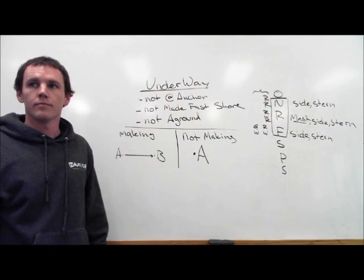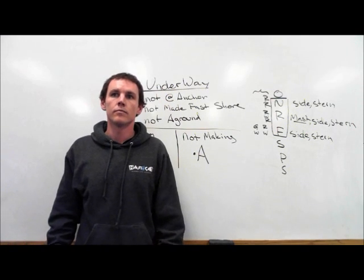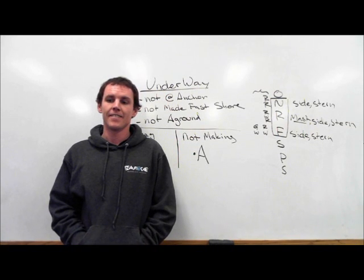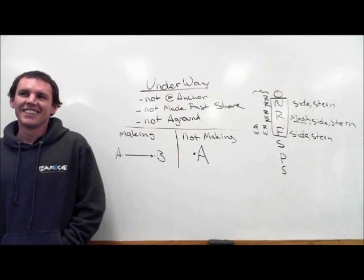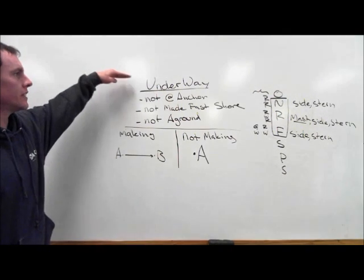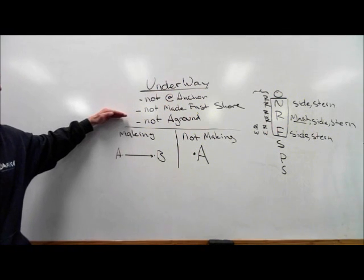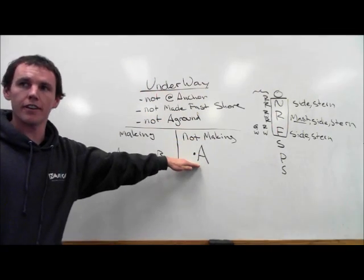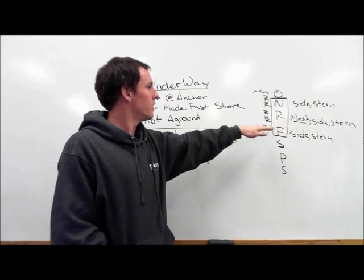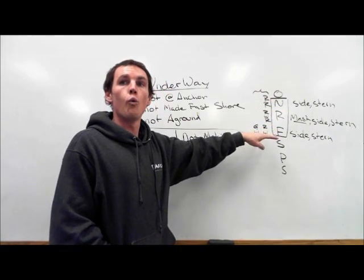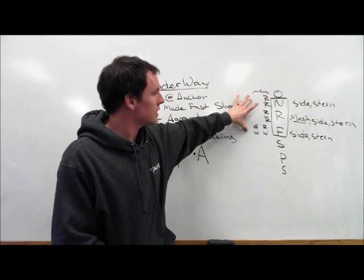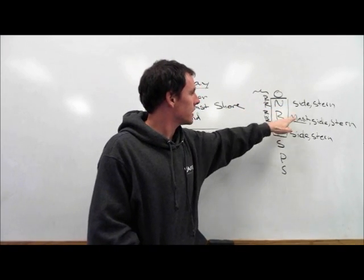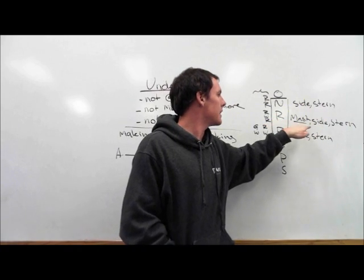I see what my problem is. I associate underway as always making way. So underway, we'll get the definition in our head. Not at anchor, not made fast to the shore, not aground. Underway making way from point A to point B. Underway not making way, you're adrift. Then we go on to our lights. Not under command and restricted fishing. When underway, identify themselves with these ID lights. In addition, when making way through the water, not under command and fishing gets side and stern. Restricted gets mast, side and stern.